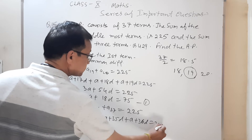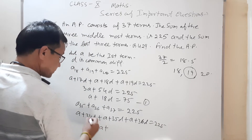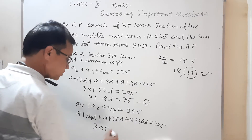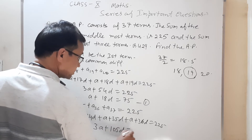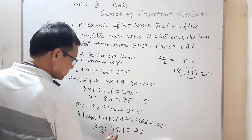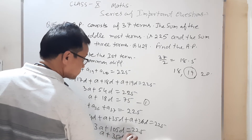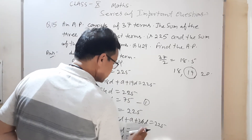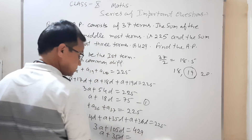This is equal to 429। a + a + a = 3a, और 34 + 35 + 36 — middlemost 35 है, तो 35 को 3 times multiply करोगे: 3a + 105d = 429। 3 से divide कर दो: a + 35d = 143।